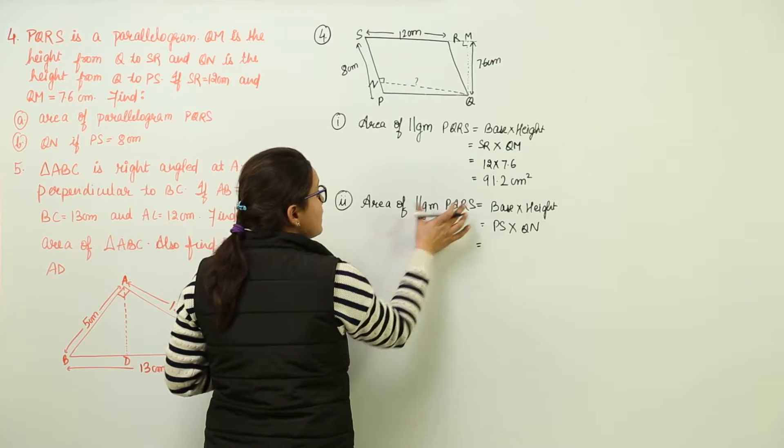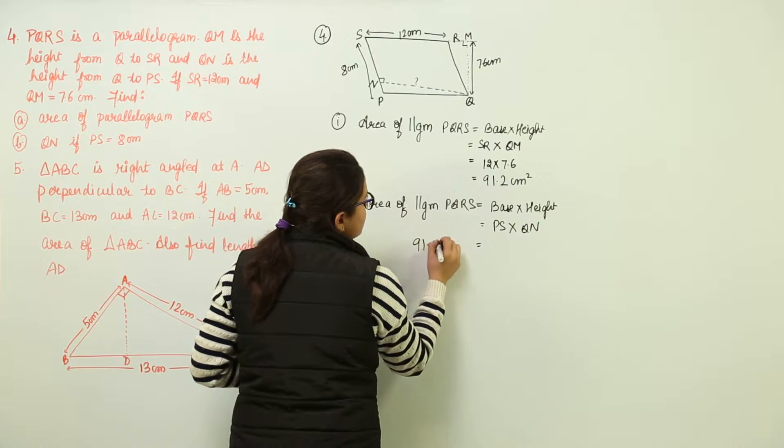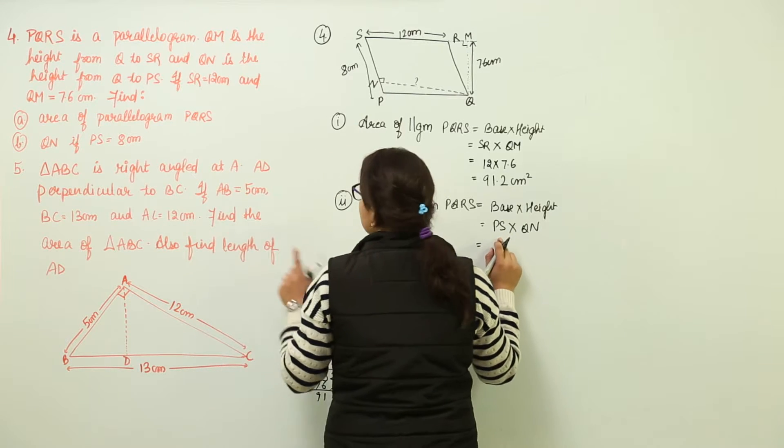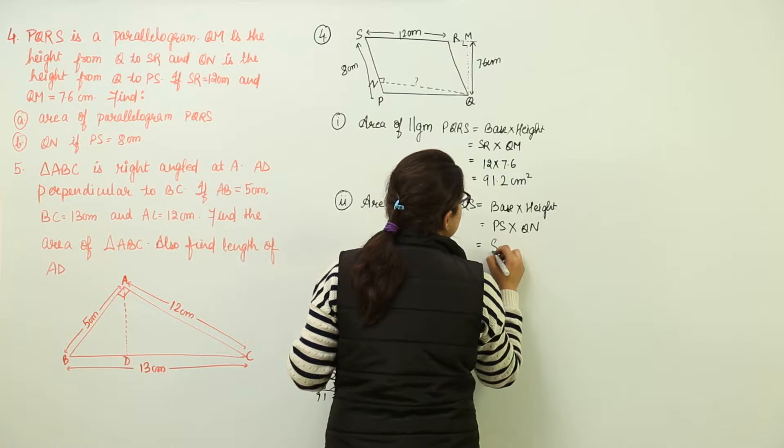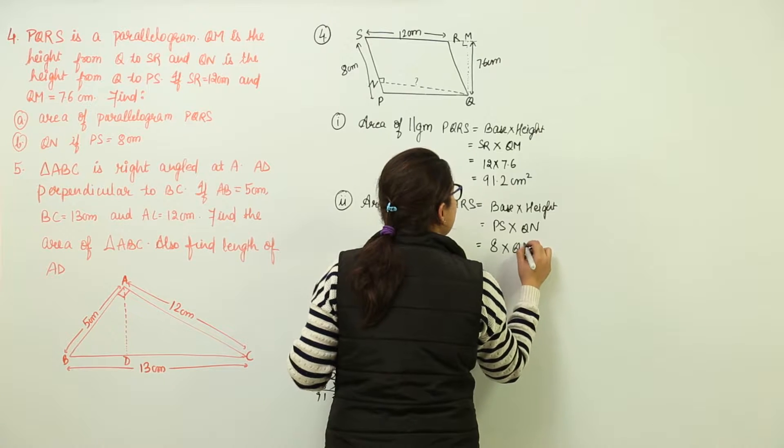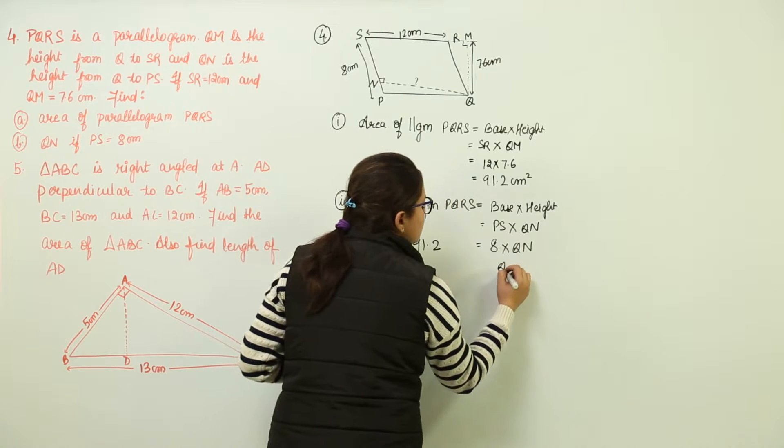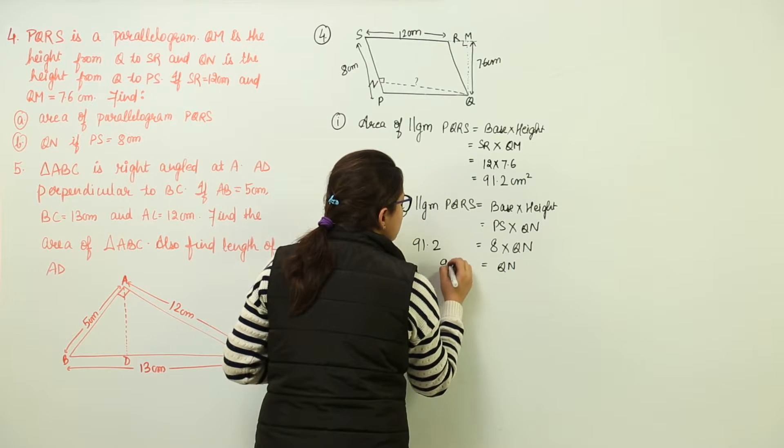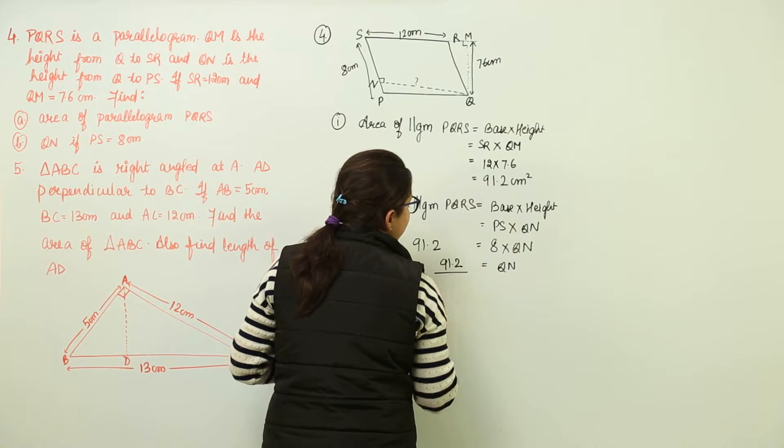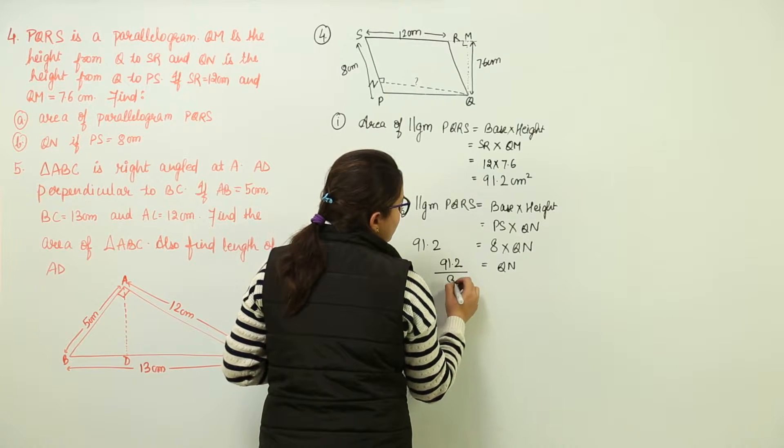So you will get the area that has been calculated as 91.2. PS has been given as 8 centimeters and we have to find out QN. So the QN is going to be equal to 91.2 over 8.